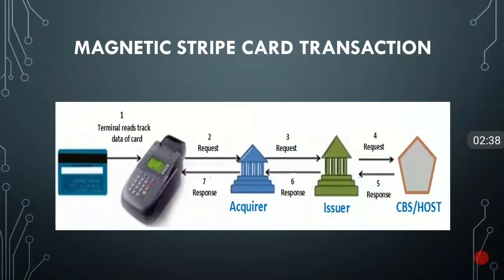Now I'm starting with a very interesting thing — how the transaction flow works in a magnetic stripe card. I have taken a POS device where only the magnetic card can be used. Whenever you are swiping a magnetic card, the track data along with the terminal details are passed to the acquirer bank. The acquirer, based on the BIN of the card number, selects the issuer. In between issuer and acquirer there is a network — it can be MasterCard, Visa, or NPCI — and through this network it goes to the issuer bank.